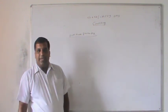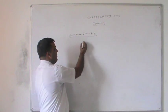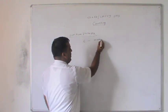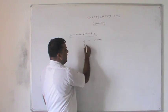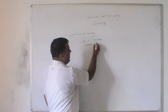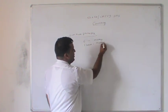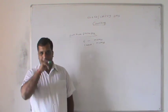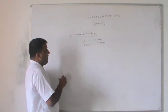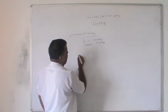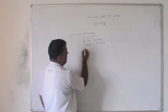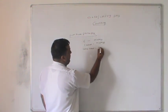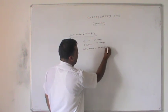The sum rule principle says: an event E can occur in m number of ways and the event F can occur in n number of ways, and both events cannot occur simultaneously. So the total number of ways the event can occur, according to the sum rule, is equal to m plus n ways.